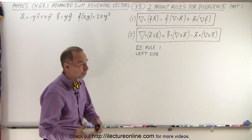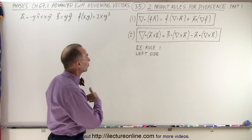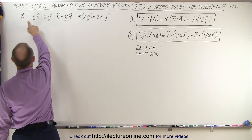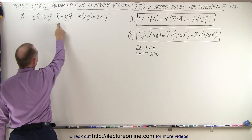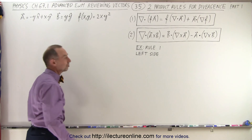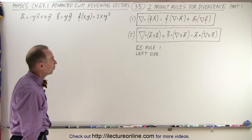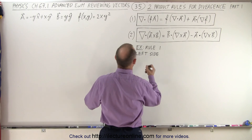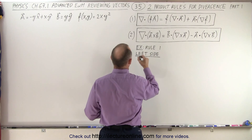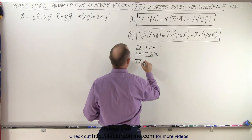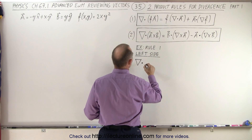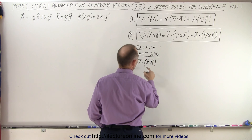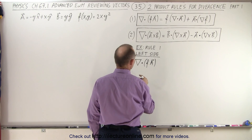Later on we'll show you how to prove some of these things, but at least let's show how that works using an example. We have the A vector and the B vector, which we used before, and now we also have a scalar function defined. What we're going to do first is calculate the left side of rule number one — take the del operator and multiply via the dot product of f times the A vector.